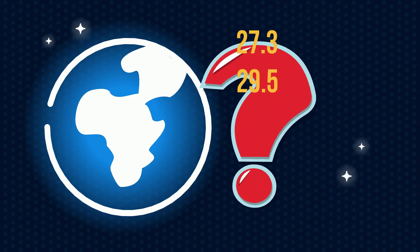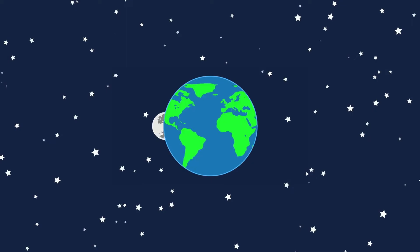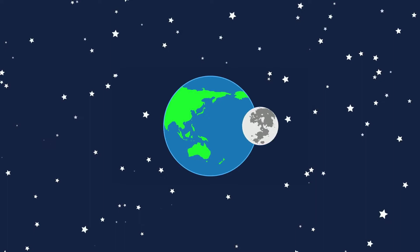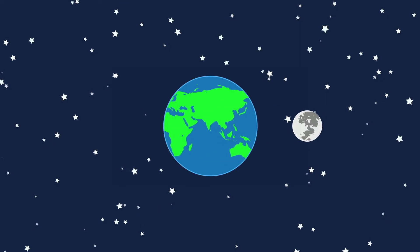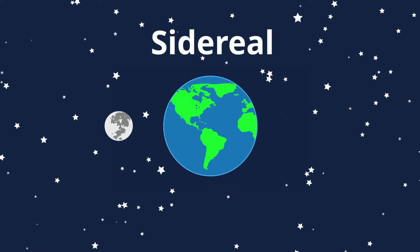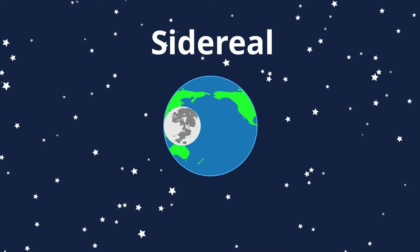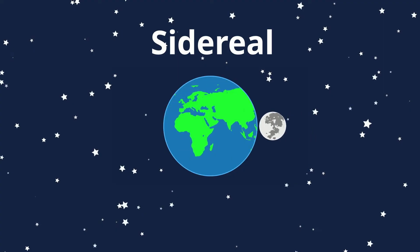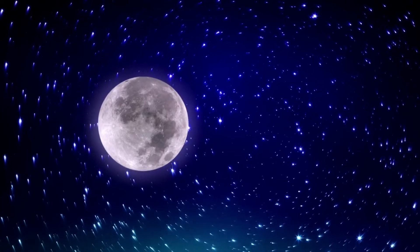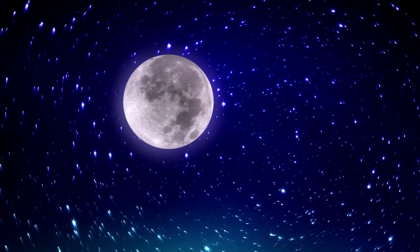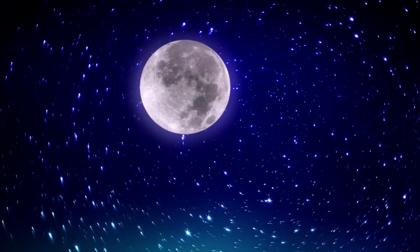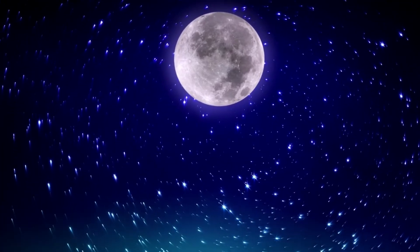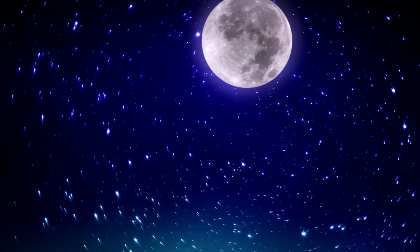Let's investigate. Measuring the motion of the moon around the Earth relative to the distance of the stars leads us to what is called the sidereal period. Sidereal means related to the stars. The sidereal period is the time required for the moon to complete one revolution around the Earth with respect to a fixed point outside the system, like a star.